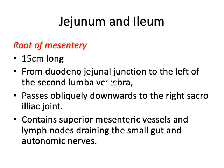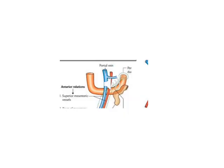Before discussing the jejunum and ileum, you should know what the root of the mesentery is. The root of the mesentery is 15 cm long. It extends from the duodenojejunal junction, to the left of the second lumbar vertebra, and passes obliquely downwards to the right sacroiliac joint. It contains the superior mesenteric vessels, lymph nodes draining the small gut, and autonomic nerves.